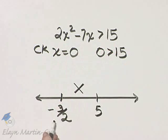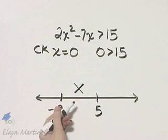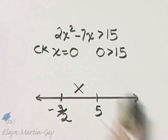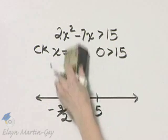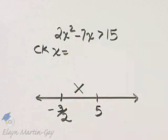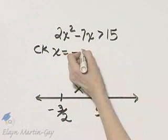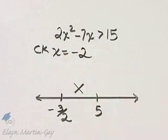Then check any number to the left of negative 3 halves. Now that's negative 1 and a half. So for example, you could check, say, negative 2 if you wanted. You could check negative 200 if you want. But check a number in each region. Here you'll find that this checks.